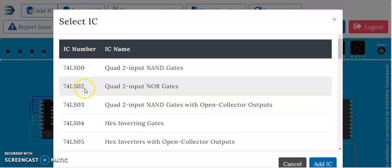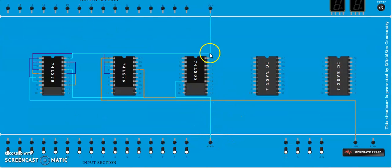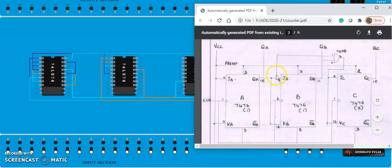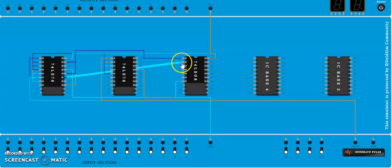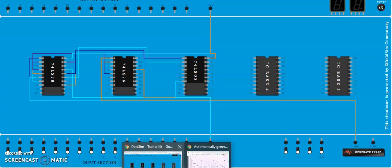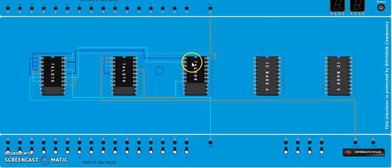Click 'Add IC', add 7408, then do the basic connections: pin 7 to ground, pin 14 to VCC. Now provide the inputs as per the designed circuit. Connect pin 15 to pin 1 of the AND gate, and pin 11 to pin 2 of the AND gate. Pin 3 of the AND gate is the output, which has to be connected to pin 4 and pin 16 of the next IC.